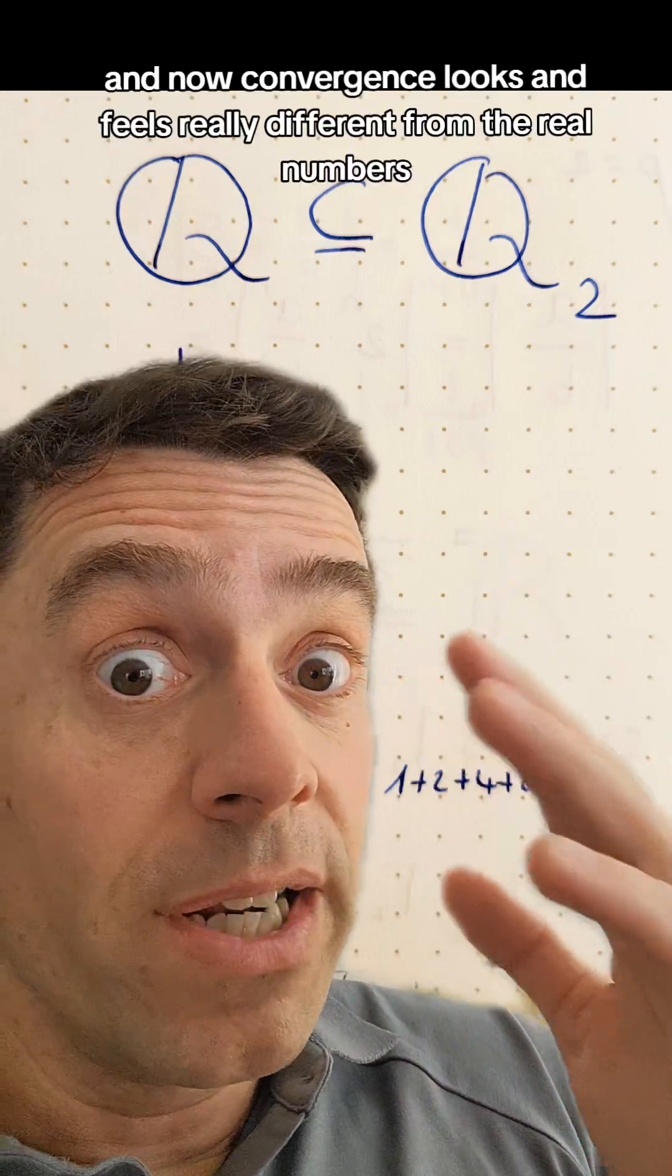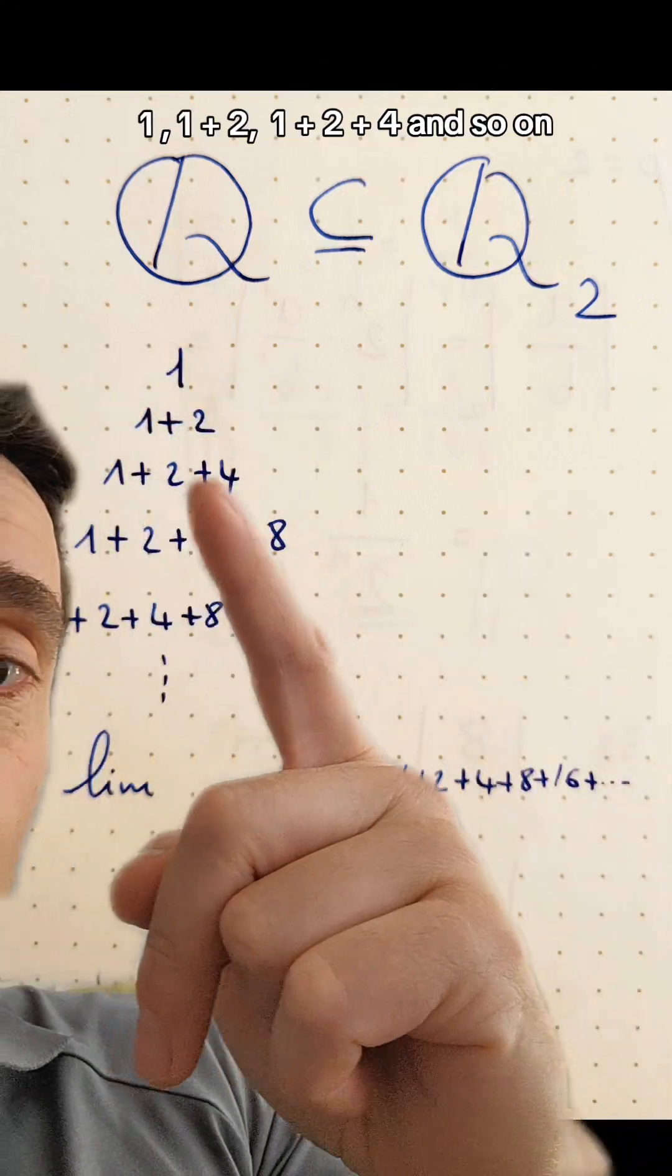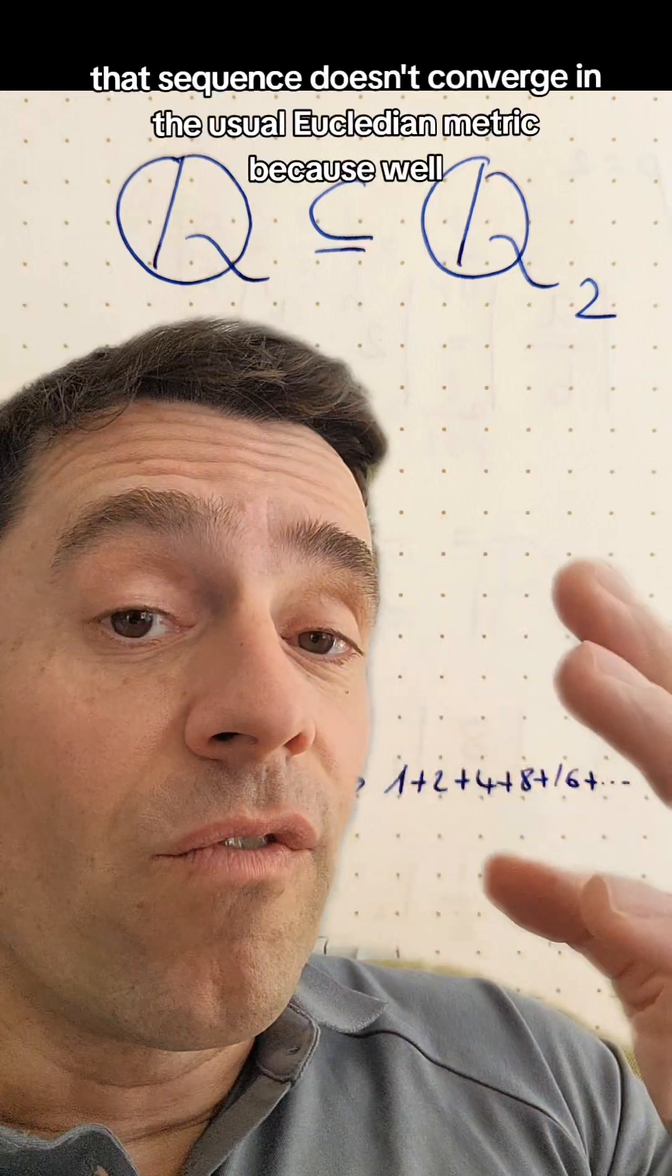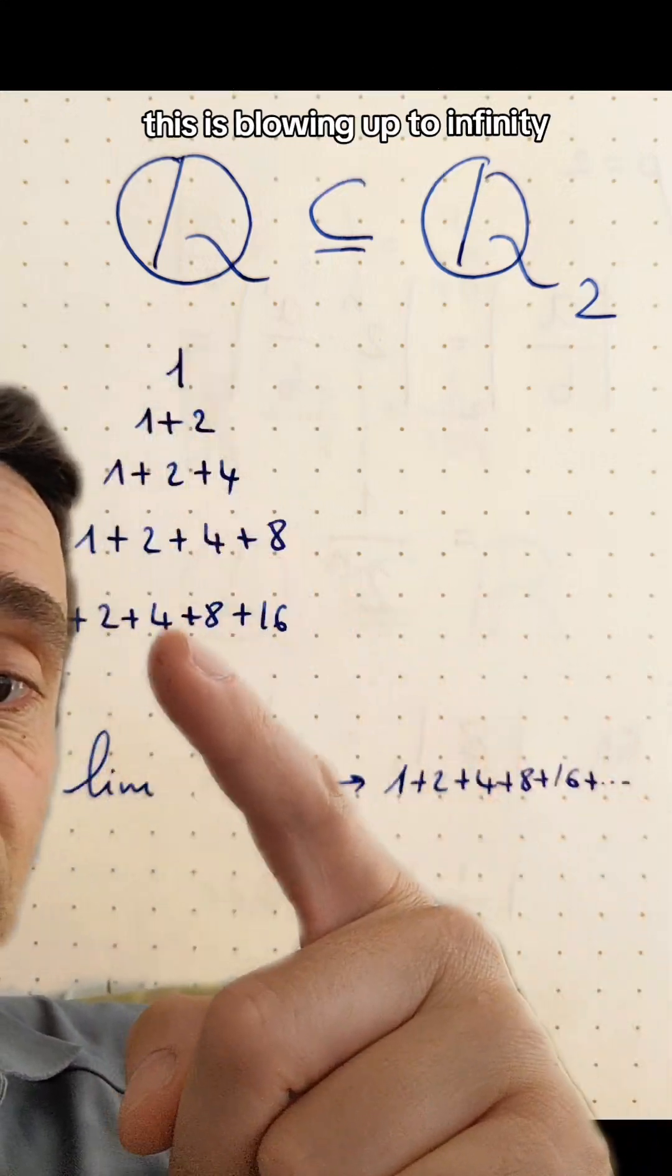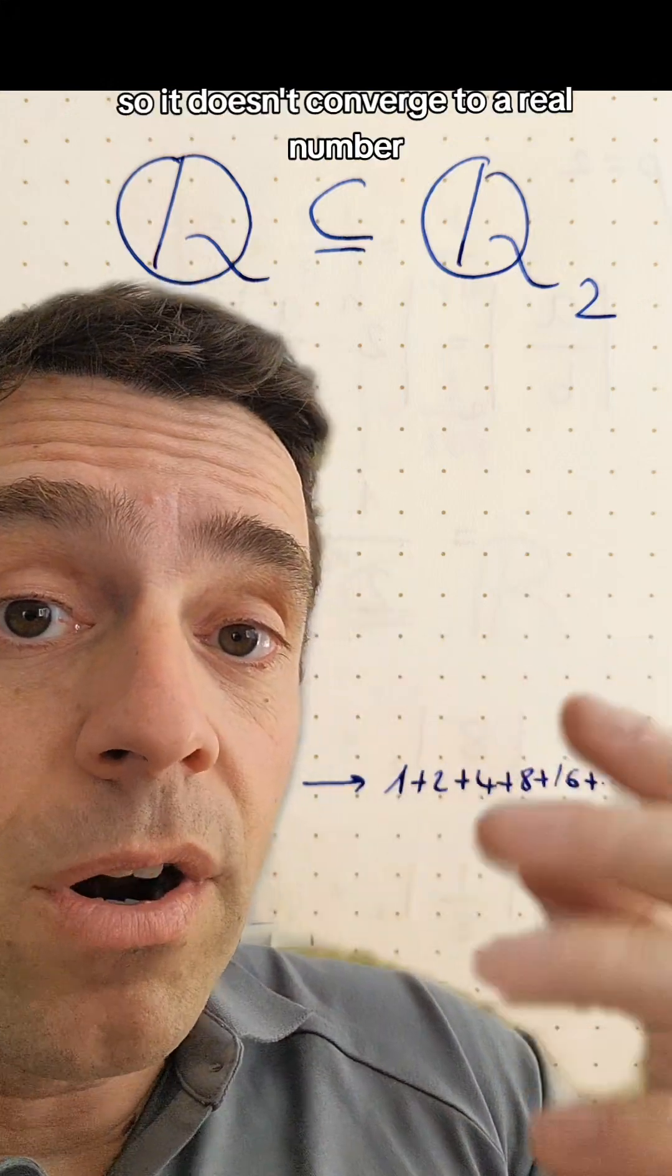And now convergence looks and feels really different from the real numbers because, for example, 1, 1 plus 2, 1 plus 2 plus 4, and so on, that sequence doesn't converge in the usual Euclidean metric because this is blowing up to infinity. So it doesn't converge to a real number.